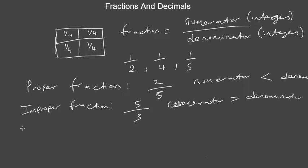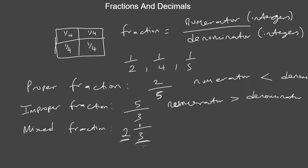We have another type of fraction known as a mixed fraction. In the case of a mixed fraction, you have a whole number — let's say 2 — then you have a fraction beside it, which in this case is 1 over 3. So this is a mixed fraction: it has a whole number and it has a fractional part.